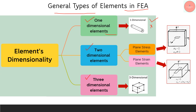In plane stress elements, the third direction — that is z — is very negligible compared to the other two like x and y. So in plane stress elements, the z-directional stress is negligible or completely zero, but we may experience some strain in the third direction. Plane strain elements are the inverse of plane stress: here the third direction is greatly larger compared to the other two, and we may experience stresses in the third direction, but the strain is very negligible.